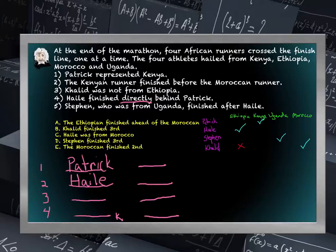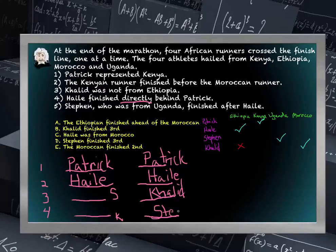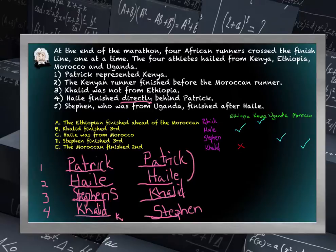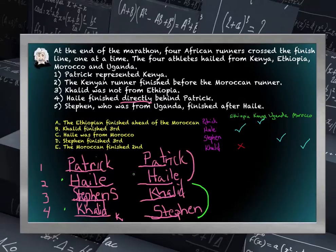Stephen, who is from Uganda, finished after Hele. That could place Stephen directly after Hele, or we can run another scenario where Khalid comes third and Stephen fourth. But we do know Khalid and Stephen are both behind Patrick and Hele, and Hele is directly behind Patrick — so Patrick and Hele must occupy the first two spots. Patrick has to be first, Hele has to be second, and third and fourth are up for grabs. Answer A says the Ethiopian finished ahead of the Moroccan, which means Hele finished ahead of Khalid — true in both scenarios.